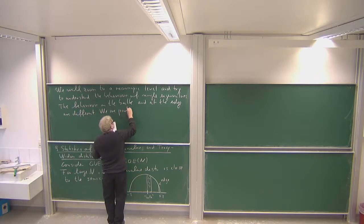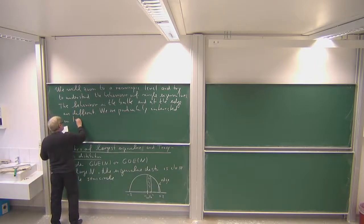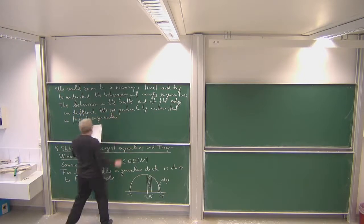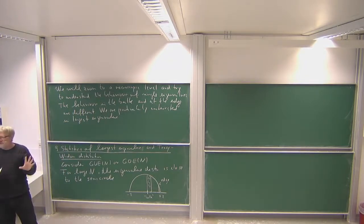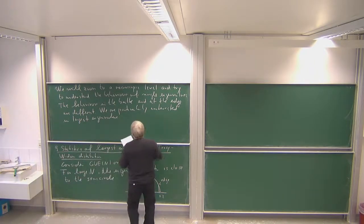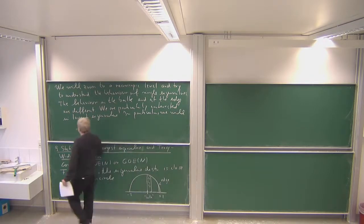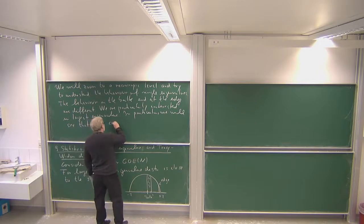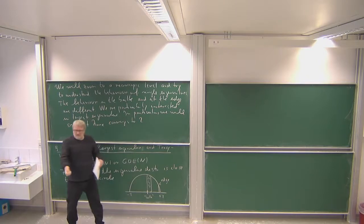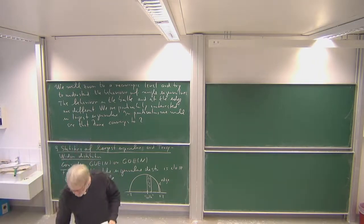We are particularly interested in the largest eigenvalue. What we will prove is that the largest eigenvalue really converges almost surely to 2, which is not covered by the semicircle law. We will see that λ_max converges to 2. But we will also try to understand: if you zoom in, what is the fine structure around 2, how it fluctuates — and that is the Tracy-Widom distribution. I want to give some ideas about what we expect for this.